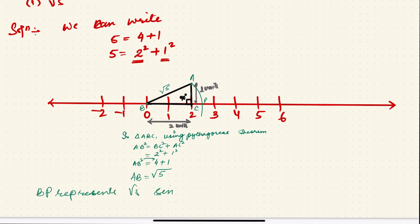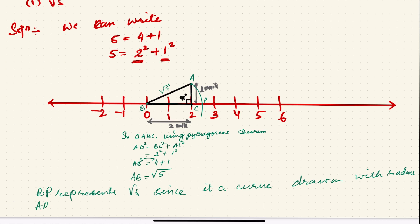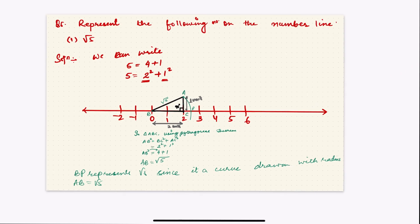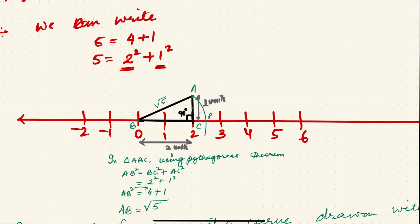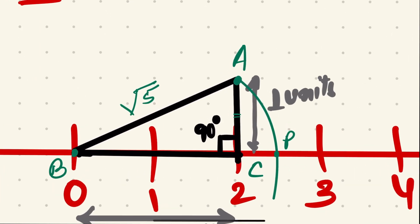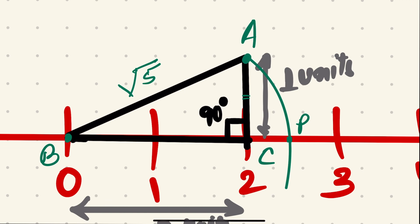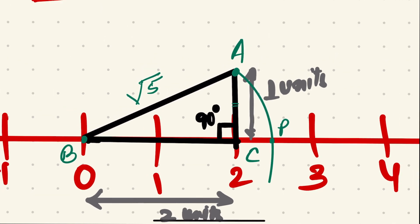BP represents root 5, since it is a curve drawn with radius BA which equals root 5. This is how you draw root 5 on the number line. I hope you understood. You can zoom in to check the construction. Thank you so much — we will meet in the next video.